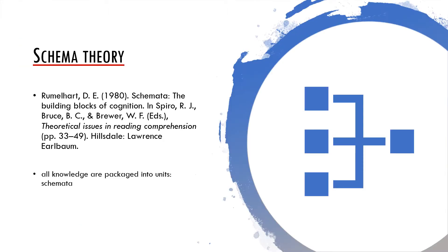Historically, a very influential approach to discourse comprehension was the so-called schema theory. In 1980, David Rumelhart understood schemata as the building blocks of cognition. He defined them as knowledge representations which we form for all concepts such as objects, situations, events, sources of events, actions and sequences of actions. According to this approach, schemata have variables, they can embed one within another, and they represent knowledge at all levels of abstraction.